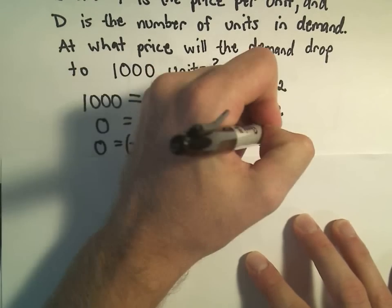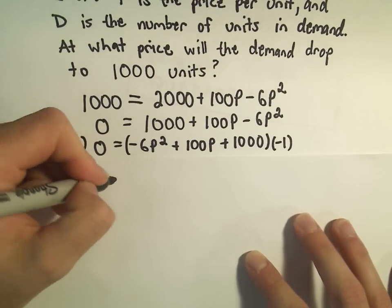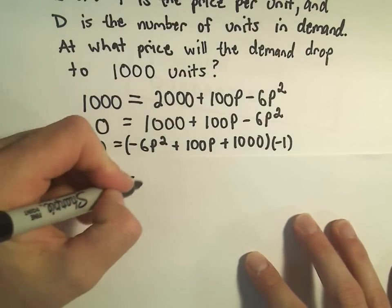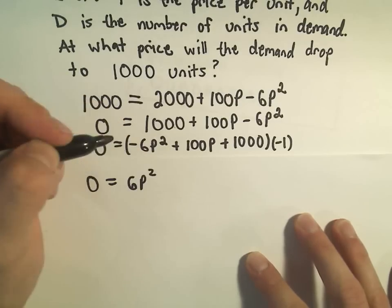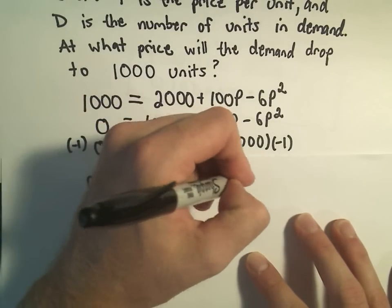Let's do that anyway since I'm talking about it. So I'm going to multiply both sides by negative 1. You could certainly go ahead and just start using the quadratic formula immediately. 6P squared, we would get minus 100P minus 1,000.